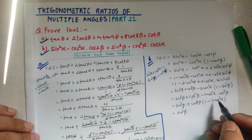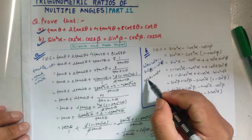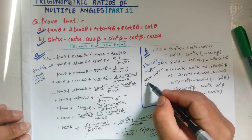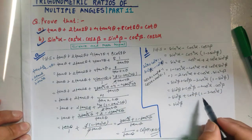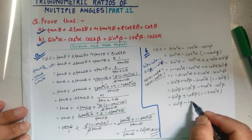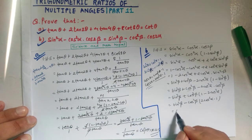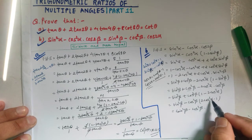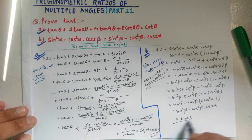Applying the multiple angle formula: cos 2α equals 2 cos² α minus 1, so 2 cos² α minus 1 equals cos 2α. Taking minus common gives minus cos 2β — wait, this becomes sin² β minus cos² β times cos 2α. This equals our RHS. Hence proved.